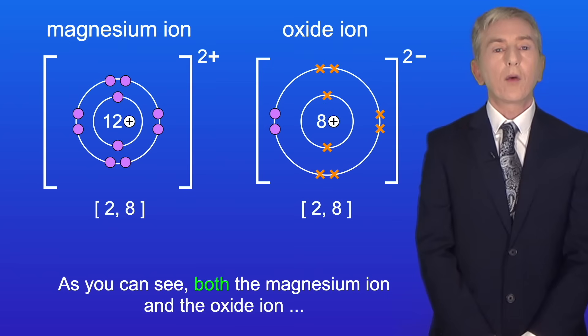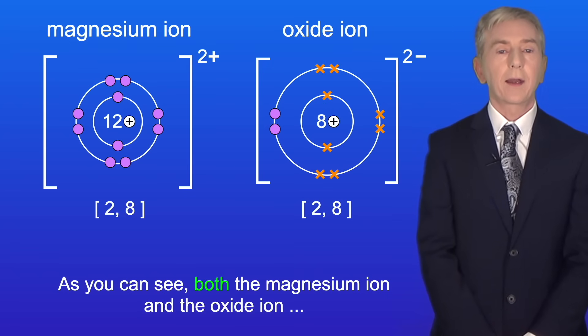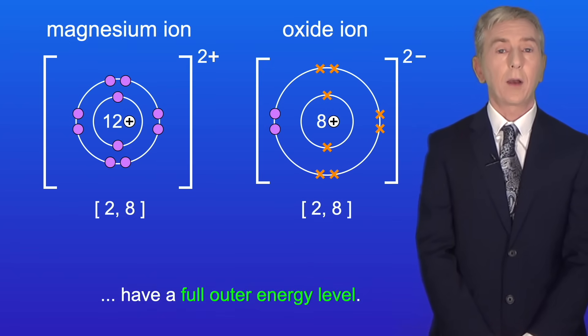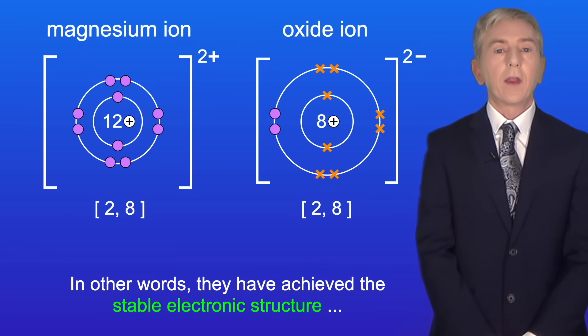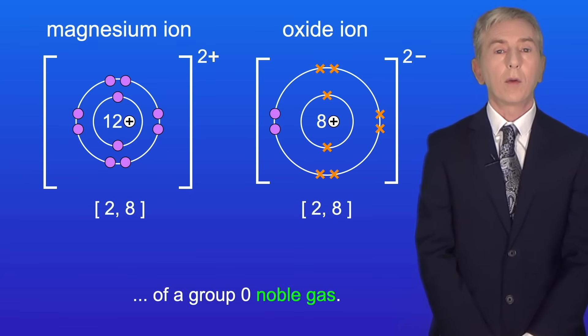As you can see, both the magnesium ion and the oxide ion have a full outer energy level — in other words they've achieved the stable electronic structure of a group 0 noble gas.